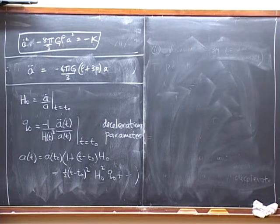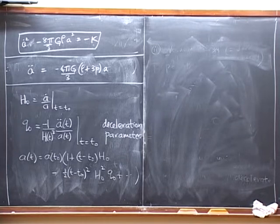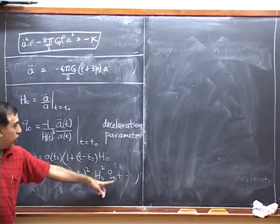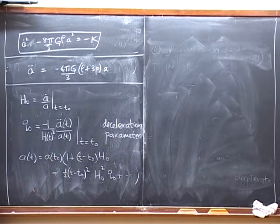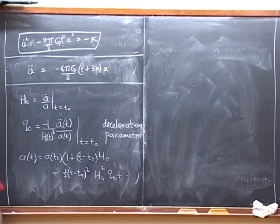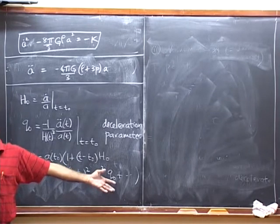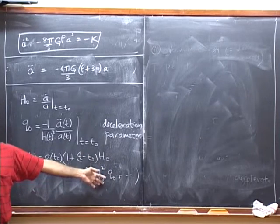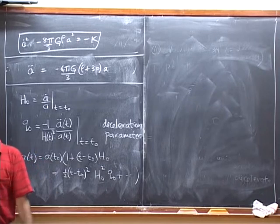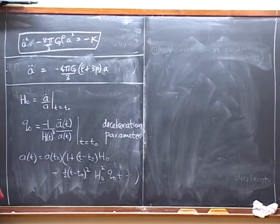In the expansion of A of t, after the first Hubble term, the next coefficient is A-double-dot over A, which is minus H₀² q₀. So q₀ appears in the Taylor expansion of A(t). In the era of low redshift and older observations, H₀ and q₀ were the two crucial parameters of cosmology - the whole goal was to determine these two parameters. But this expansion has limited validity: as we have already seen, Hubble's law doesn't make sense for redshifts of 6 or 7.